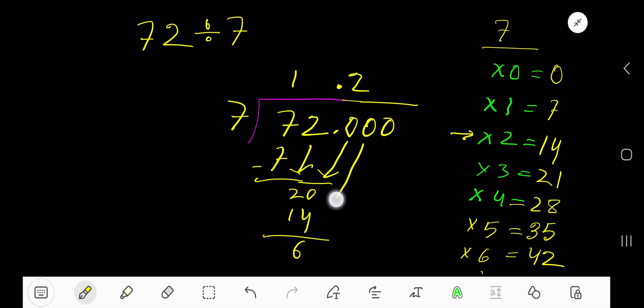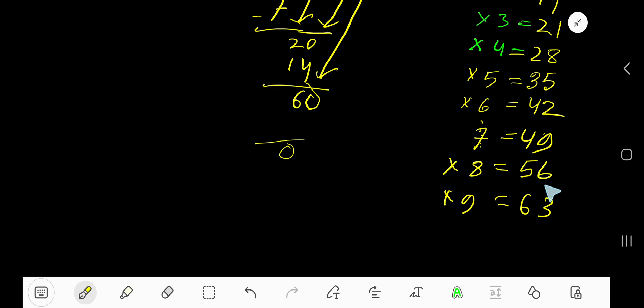Bring down the next 0. 7 goes into 60 how many times? 8 times 56, 9 times 63 which is too much. So 8 times.